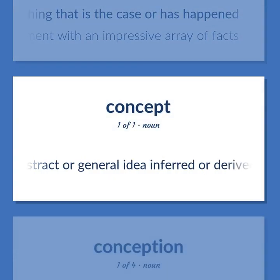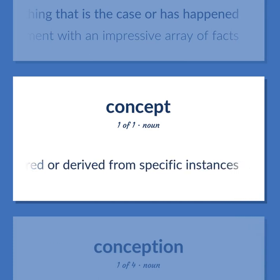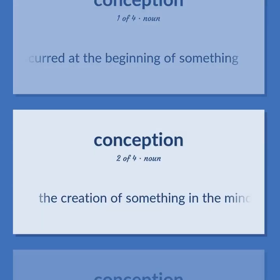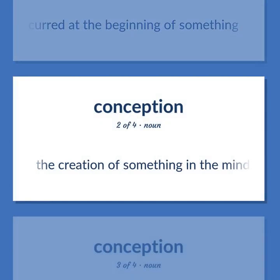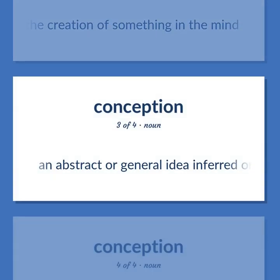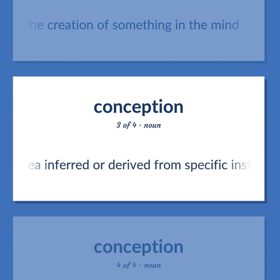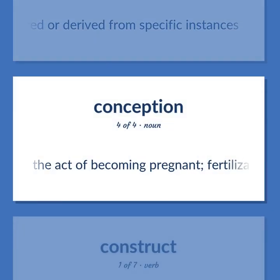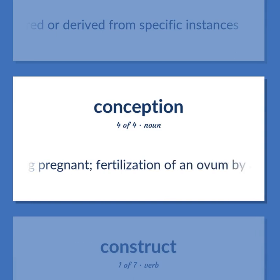Concept: An abstract or general idea inferred or derived from specific instances. The event that occurred at the beginning of something. The creation of something in the mind. The act of becoming pregnant; fertilization of an ovum by a spermatozoan.